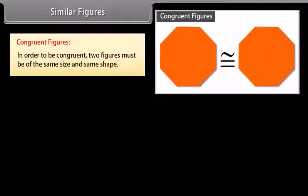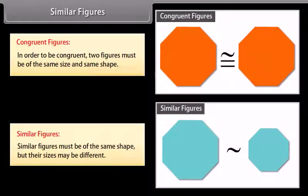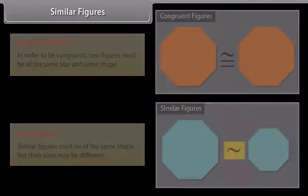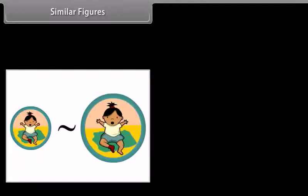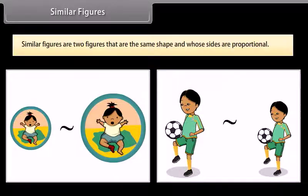Similar figures. Congruent figures: in order to be congruent, two figures must be of the same size and same shape. Similar figures must be of the same shape but their sizes may be different. This is the symbol that means similar. When you have a photograph enlarged, you make a similar photograph. A photograph can also be shrunk to produce a slide. So, similar figures are two figures that are the same shape and whose sides are proportional.